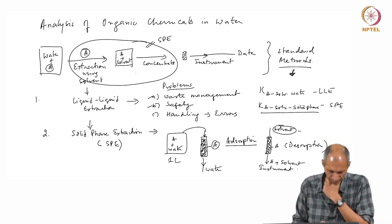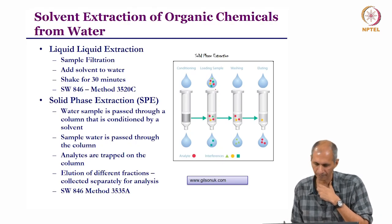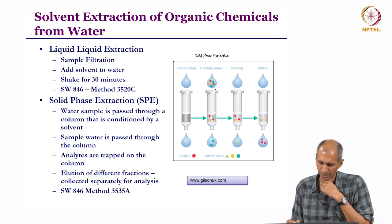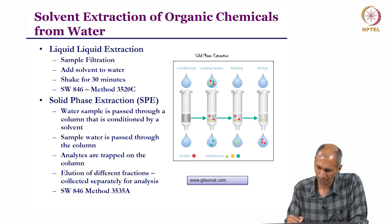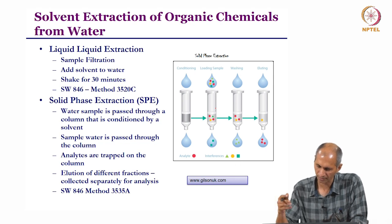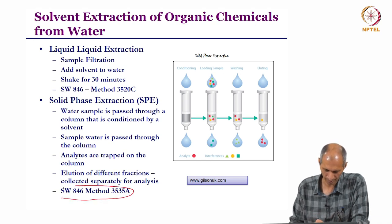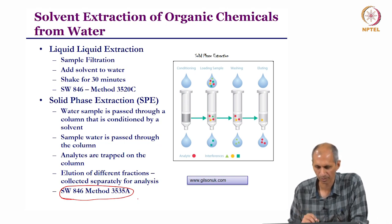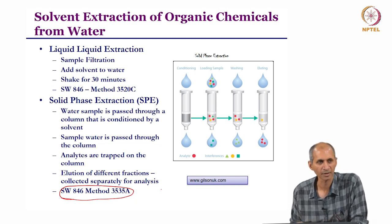In solid phase extraction, we have a cartridge with a solid; material is sent through, the analyte is initially stored here, then eluted. There is a standard method for this as well — there are a large number of standard methods covering different extraction methods, including quality control for extraction: recovery efficiency and losses for different compound groups with different methods.